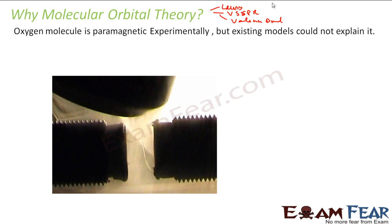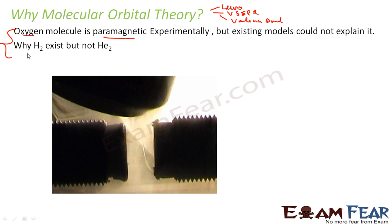If you take oxygen in the lab, experimentally you see oxygen is paramagnetic. This is liquid oxygen and it gets attracted towards a magnet. So oxygen is paramagnetic — experimentally this is true. But with the existing models we could not explain why it is paramagnetic. Also, H2 exists but He2 doesn't exist. We don't have answers for the chemical properties of molecules. For these, we need molecular orbital theory.